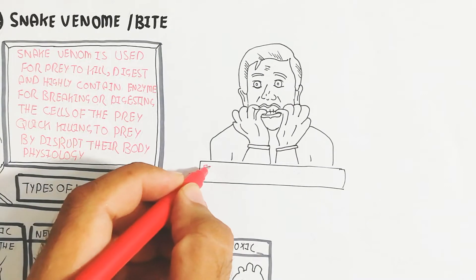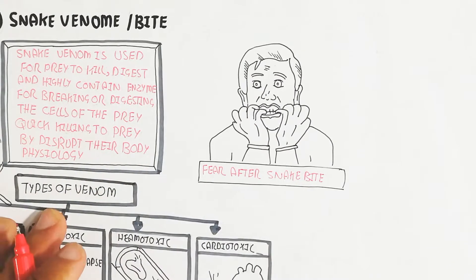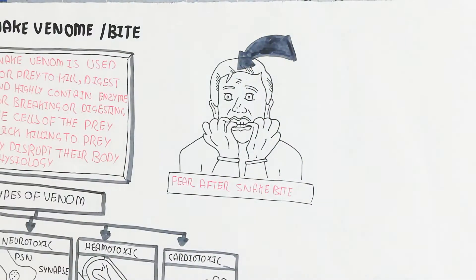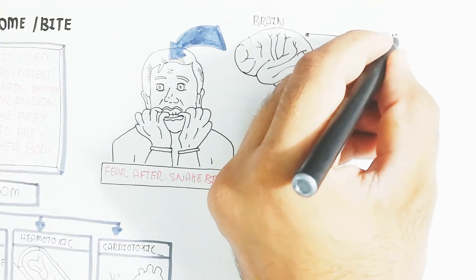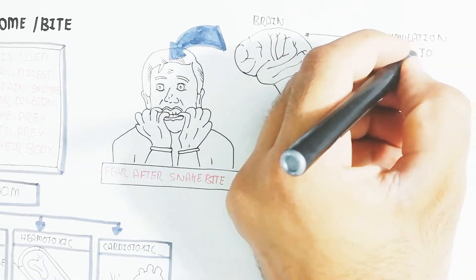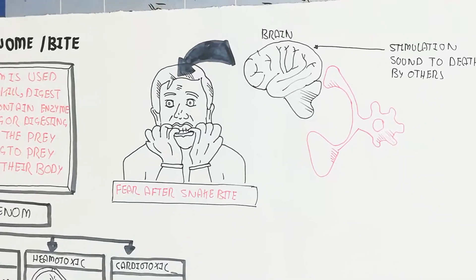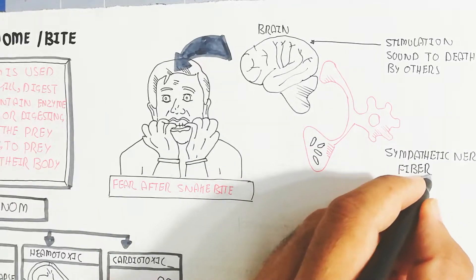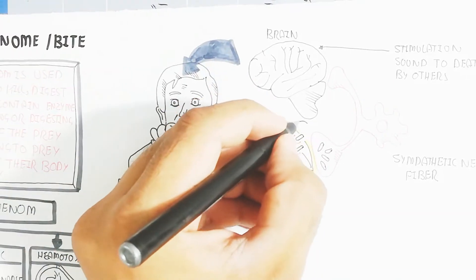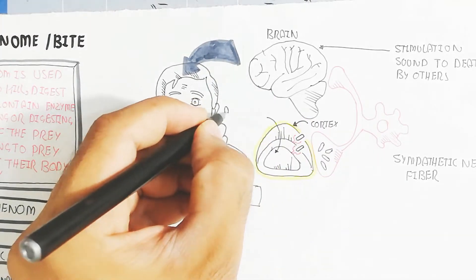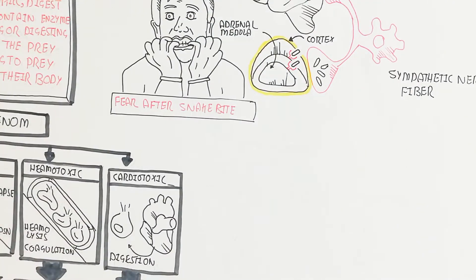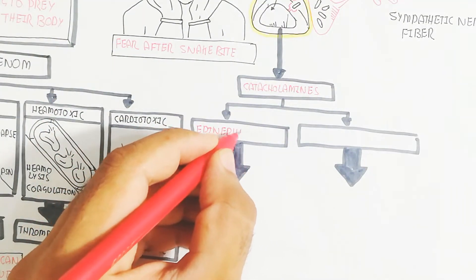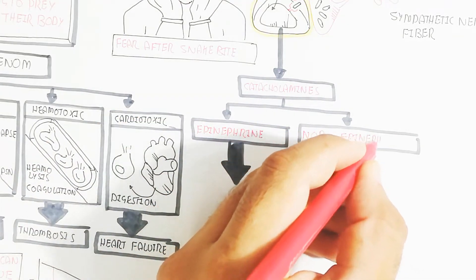After a snake bite, fear significantly worsens outcomes. The more you fear, the greater the chance of death, because fear increases sympathetic nervous system stimulation. This releases cortisol and catecholamines from the adrenal medulla — including epinephrine and norepinephrine — which accelerate venom's effects throughout the body.